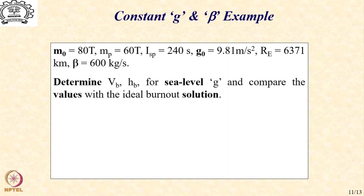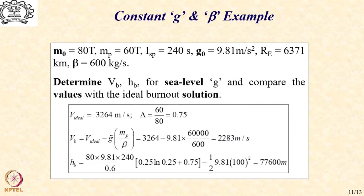Let us try and determine the burnout velocity and the burnout altitude for sea level value of gravity and compare these values with the ideal burnout solution. So, let us go through the steps. First, let us write down the value for the ideal burnout velocity that we have already obtained. So, then introduce the propellant loading parameter, that is 60 tons by 80 tons, that is about 0.75, that is the propellant loading factor.